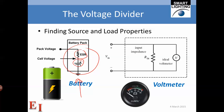We have also learned in experiment one that when we connect a measurement device such as a voltmeter to measure something, we are going to be adding an input resistance in addition to an ideal voltmeter.